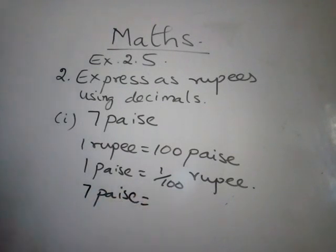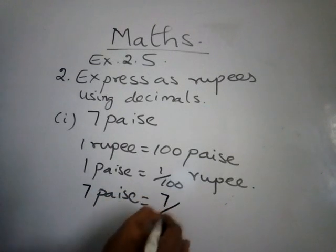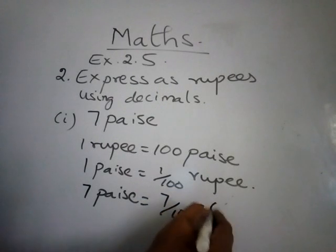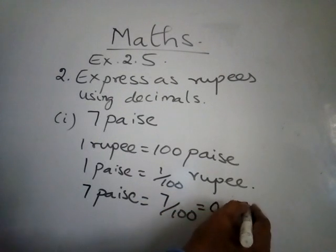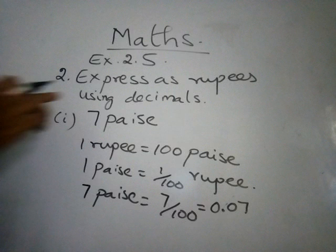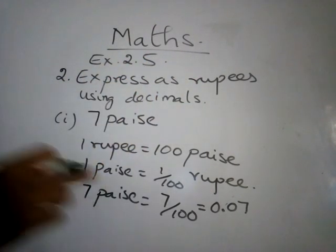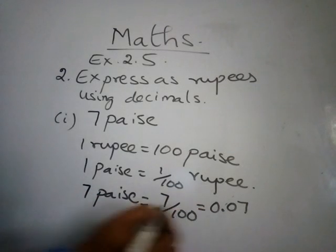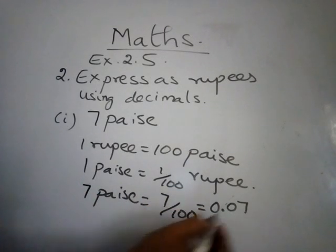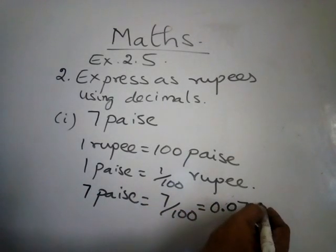7 paise will be, yes, very good, 7 by 100. What is 7 by 100? Either you can write 7 by 100 or 0.07. Because the question is clearly mentioned as using decimal, you have to mention as decimal. This is fraction. 7 by 100 is fraction. So 0.07 rupees.